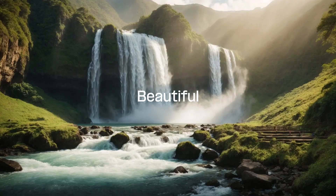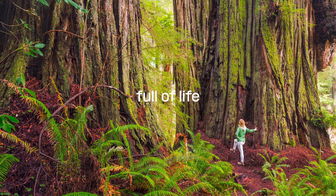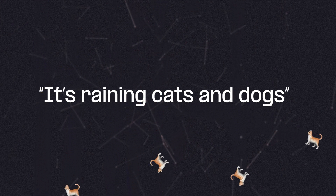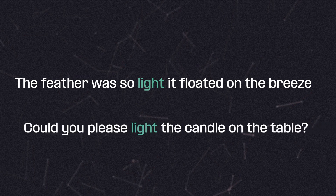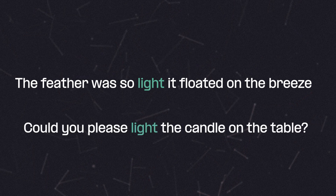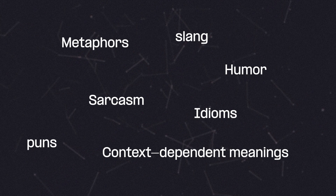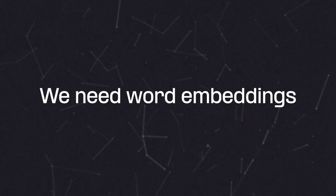Language is beautiful, expressive, and full of life, but it's also kind of confusing. Phrases can mean things other than the literal words being used, and the same word can have different meanings just based on the words around it. All of these nuances become a problem for computers that only understand ones and zeros, which is why we need word embeddings.